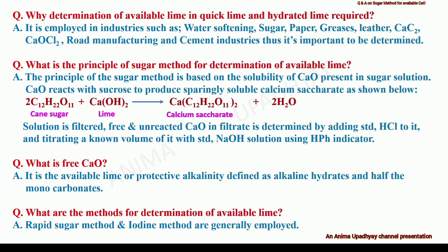Why is determination of available lime in quick lime and hydrated lime required? Quick lime and hydrated lime are used in many industries. Therefore, the determination of available lime in quick lime and hydrated lime is very important. These industries include water softening industry, sugar refineries, paper industry, manufacture of greases, leather, calcium carbide, bleaching powder manufacture industry, road manufacturing and cement industries, and many more.